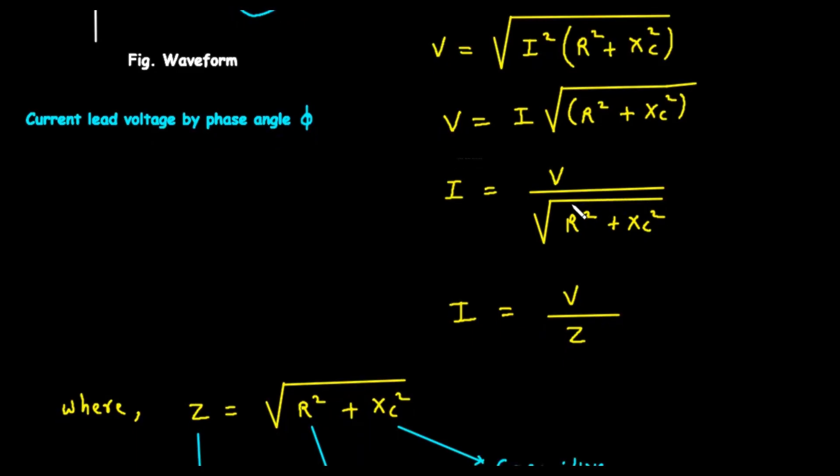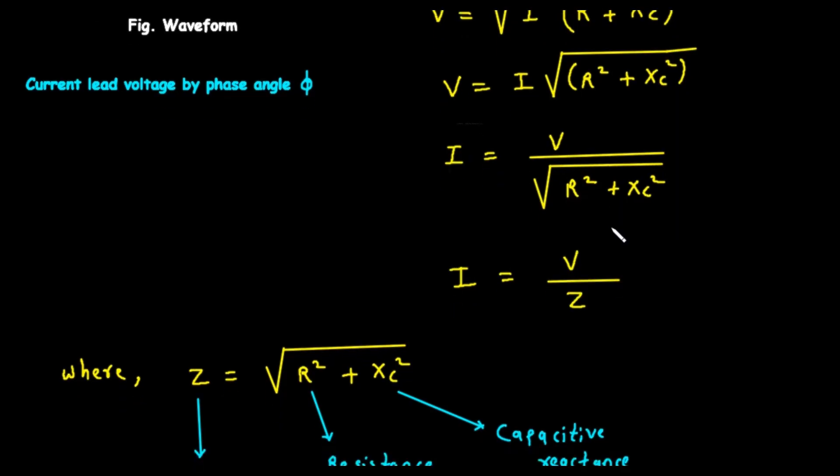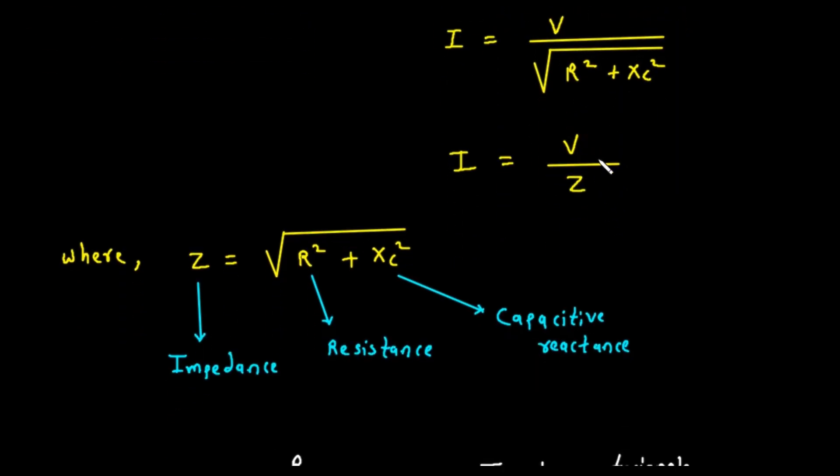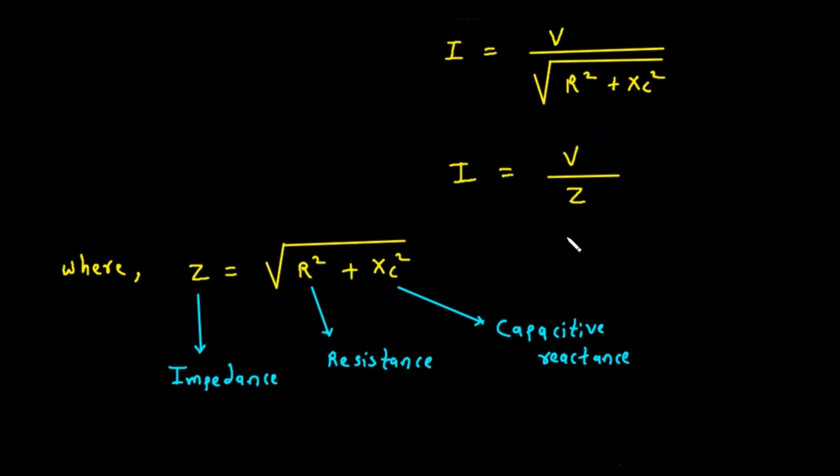From this, we can also solve for the current I. By rearranging the equation, we get I equals V divided by the square root of R squared plus XC squared. This expression in the denominator, the square root of R squared plus XC squared, is extremely important. It represents the total opposition to current flow in the entire circuit, combining both the resistance and the capacitive reactants. We give this total opposition a special name, impedance, and we represent it with the letter Z. So Z equals the square root of R squared plus XC squared. This simplifies our current equation to a familiar form, I equals V divided by Z. This is Ohm's law for AC circuits.